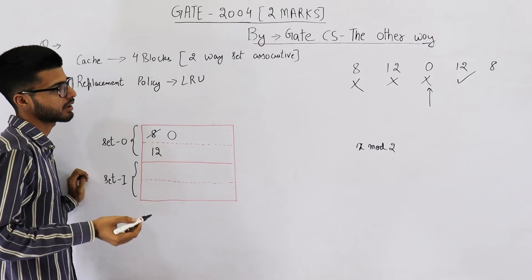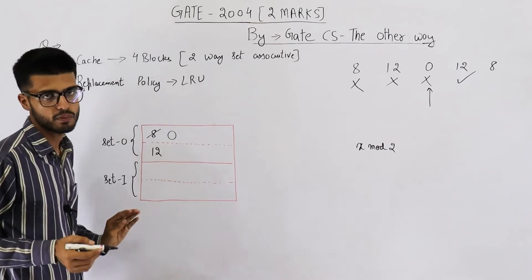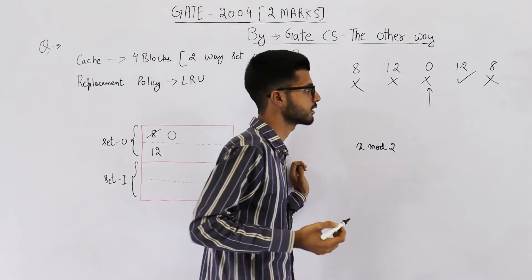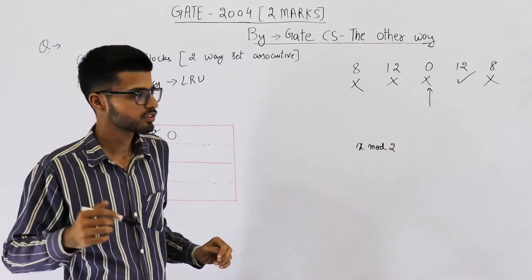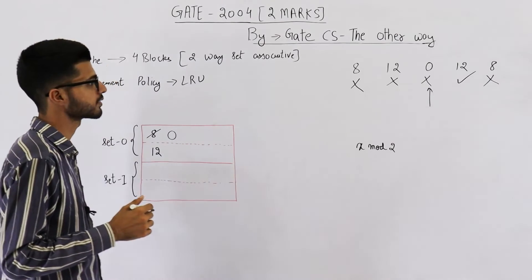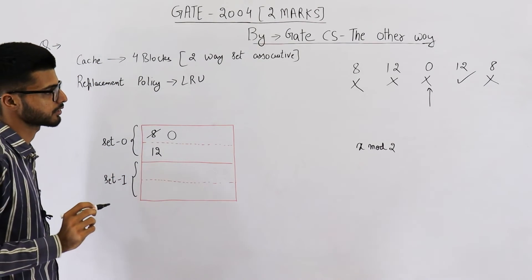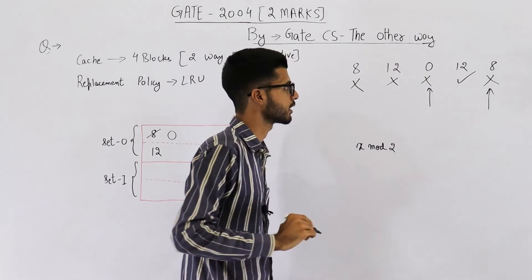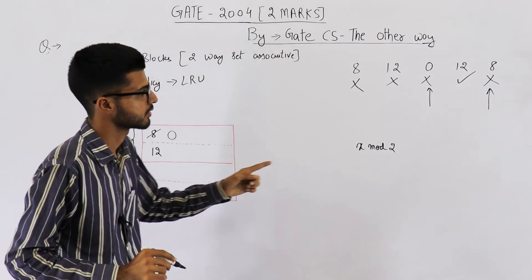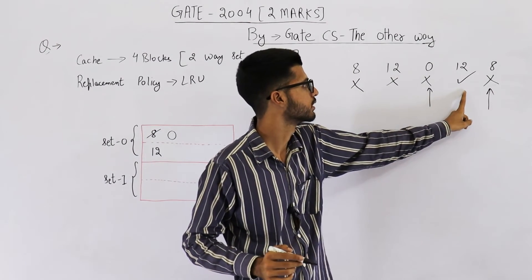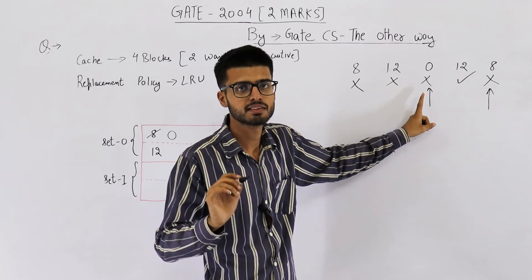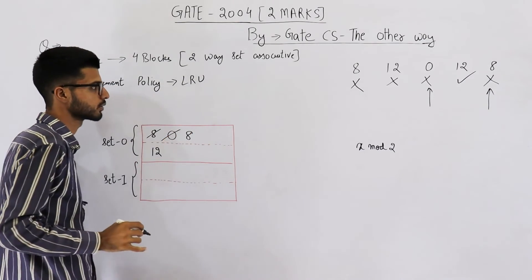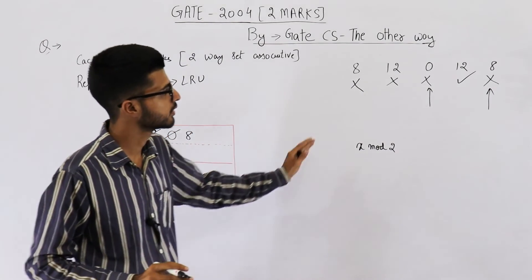After that, we make a reference to block number 8. 8 is nowhere found in cache. That means this again will be a miss. So our answer is 4. We have 4 misses. Let's also see where this block will be placed in the cache. Now from here, that means from the current reference, you look back into time. 12 is the recently accessed one. We have accessed 12 here only. And 0 is least recently accessed or least recently used. That means you are going to replace it again with 8. Answer is 4. These are those 4 misses.